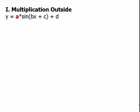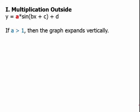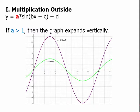For multiplication on the outside: if A is greater than 1, the graph expands vertically. For example, y equals 3 sine x is much taller — it goes up higher and down lower — but intersects the x-axis at exactly the same places; it has only changed vertically. If A is a fraction between 0 and 1, the graph contracts vertically — the peaks and troughs are much closer to zero, so it's much closer to being flat.